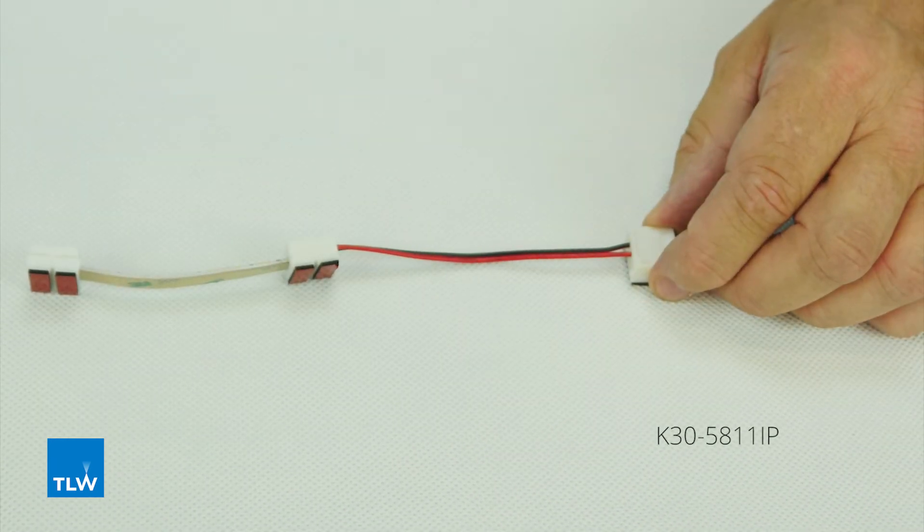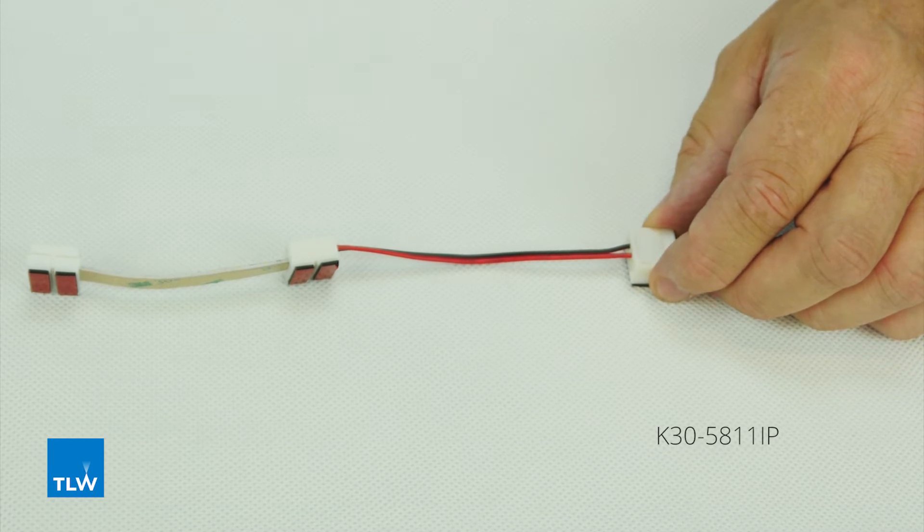With the IP rated tapes, we also have a 100mm corner connector called the K30-5811 IP.